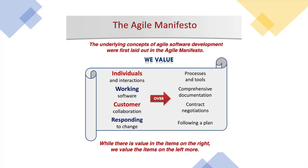The third is 'Customer collaboration over contract negotiation.' If you are negotiating a lot on contracts and at the end of the day customer satisfaction is not delivered, it's of no use. Customer collaboration is more important than contract negotiations. The fourth is 'Responding to change over following a plan.' For example, if there is an incident and you say you must follow the approval process before fixing it, the problem will escalate. Instead, you first respond to the change, fix the problem, and then follow the process. This is why the Agile Manifesto has brought a lot of change across the IT industry.